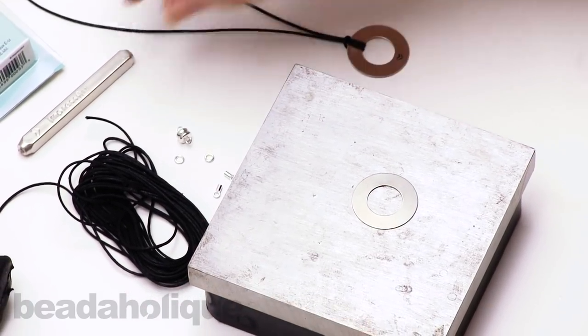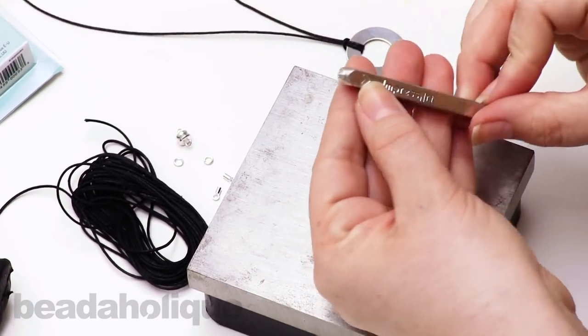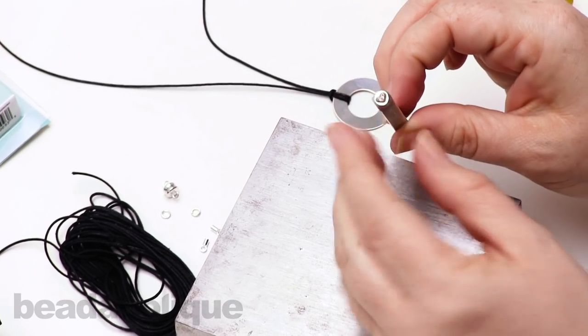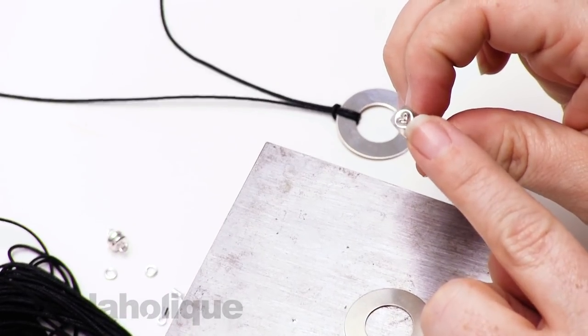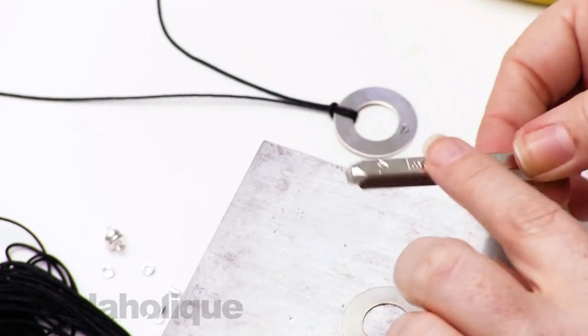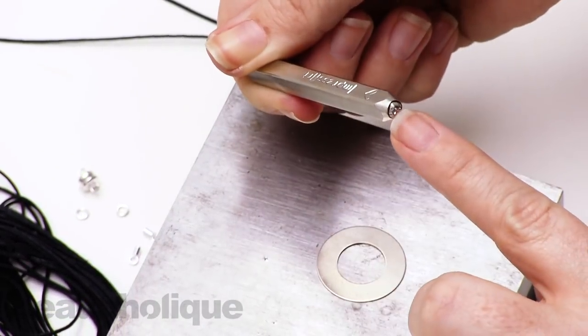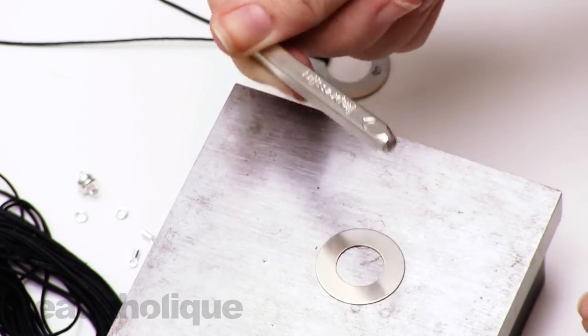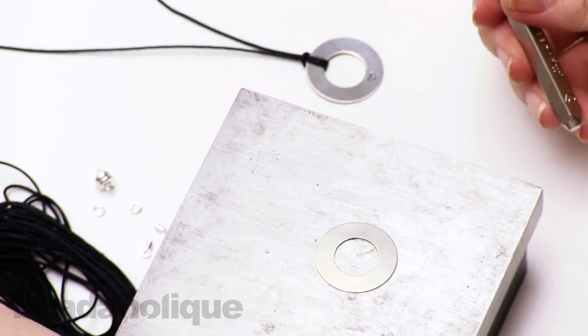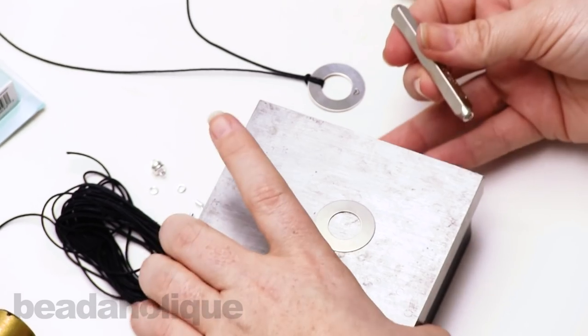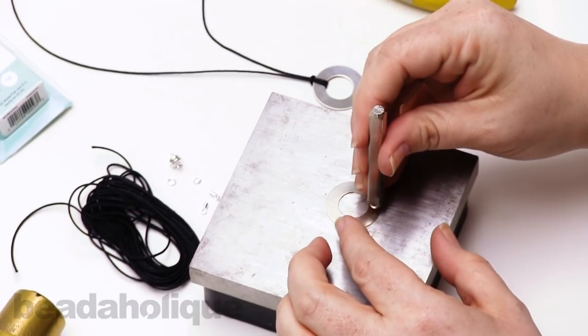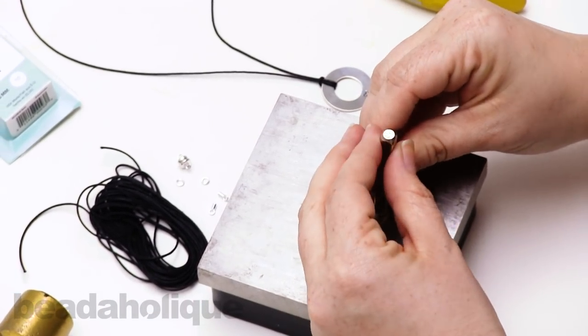And you can tell by looking at the end which side you're going to want your little heart on. So usually the ImpressArt stamping here is going to be facing you, but just always double check the direction of your particular stamping.